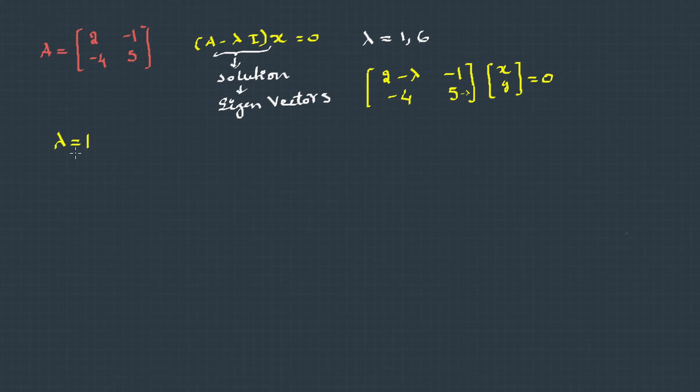If lambda is 1, when we substitute 1 in this it becomes this. If you observe carefully, the determinant of the coefficient matrix is 0, that means this will have infinitely many solutions. To find the solutions we can open the matrix. You can either use the first row or the second row. Let me use the first row: x minus y equals 0, or x equals y.